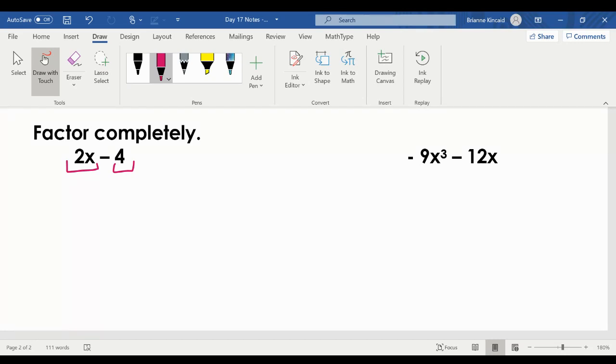I try to look at the numbers first. I have a two and I have a four. The greatest number that divides into both of them would be two. Then I look for variables. My first one has an x. My second one has no variables, which means your GCF in this case is only two.